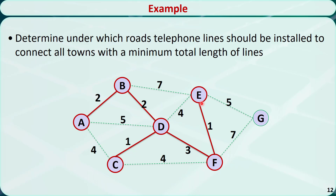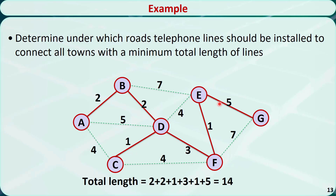Repeat this step: find one unconnected node closest to A, B, C, D, E, and F. The closest and only remaining node is G — the distance from G to E is 5. Let's connect E and G. This is the final solution; it forms a minimum spanning tree. The total length is the sum of the lengths of the included arcs, which is 14.